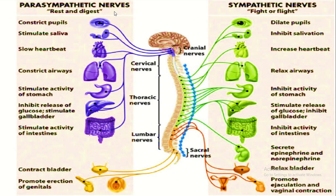Parasympathetic: rest and digest. Sympathetic: fight and flight response. Parasympathetic causes constriction of pupils — that is normal at rest. But Sympathetic causes dilation. During the digestion process, Parasympathetic stimulates saliva secretion, while Sympathetic inhibits salivation.